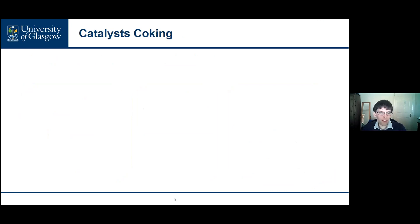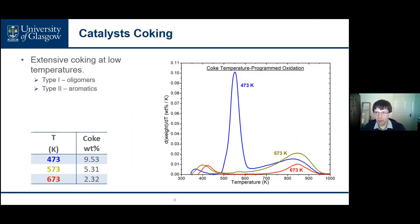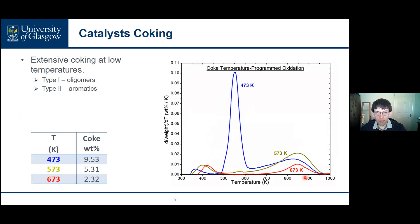Examining the hydrocarbons not released from the zeolite, some coke is produced at all three temperatures, but the level of coking is much more significant at the lower reaction temperatures. The coke can be separated into two types: type one coke, which oxidizes at a lower temperature and is only significant at the lowest reaction temperature investigated, corresponding broadly to large oligomer chains; and type two coke, which is produced at all three reaction temperatures and corresponds to more aromatic species trapped within the zeolite.